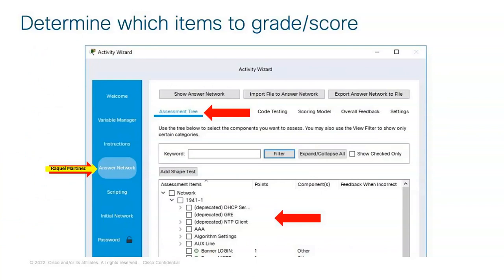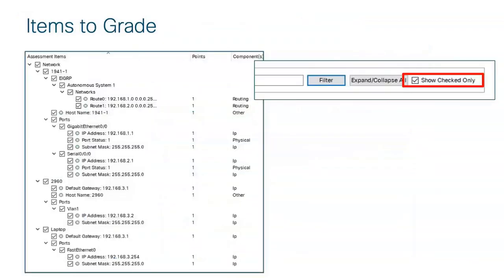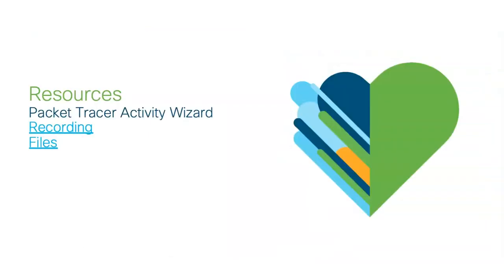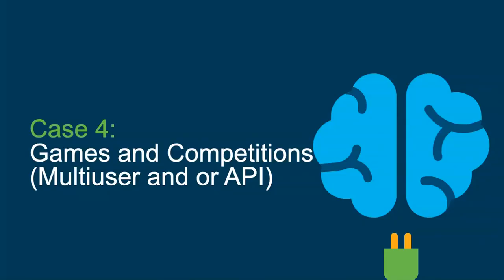Here is an example of the answer network and the assessment tree where you can select which items to score. If you want to see everything selected, click 'Check Only' to show all selected scoring items. The locking options include many things — from switching to logical workspace to the delete tool, preventing students from deleting or adding devices. We already have a past session called 'Packet Tracer Activity Wizard' with recording and files, where we talk in more detail about this.